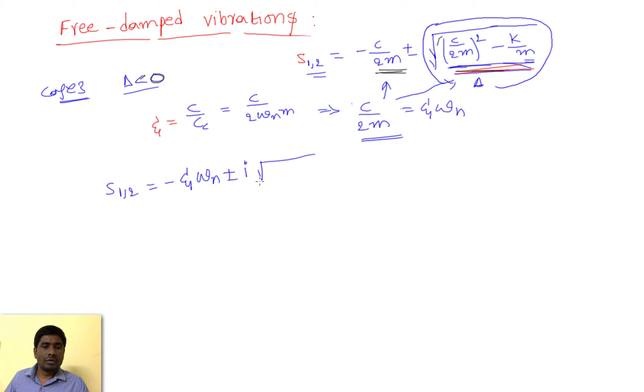Actually, here it will come xi omega n, but since we have taken minus one as common, or multiplied with minus one to convert this as positive, this term will come here and this term will come here. When it comes here, it will become omega n squared minus xi squared omega n squared.